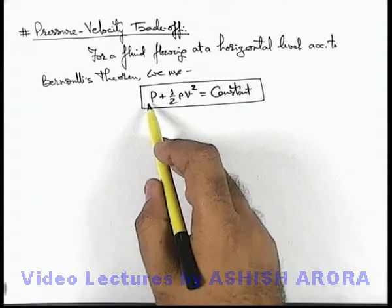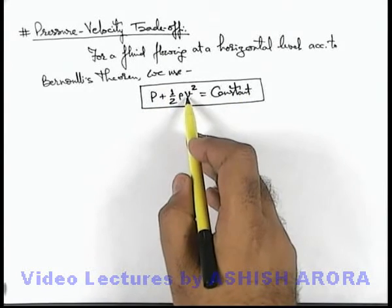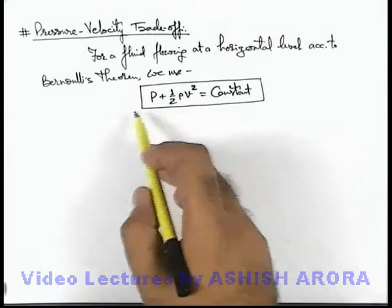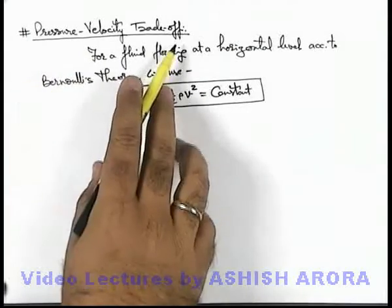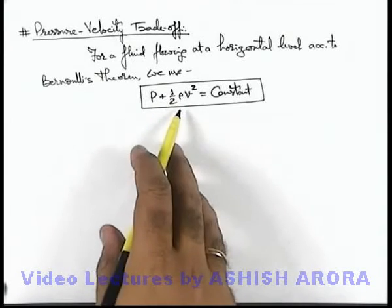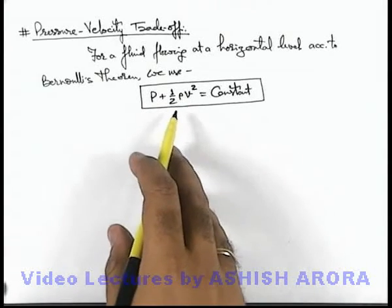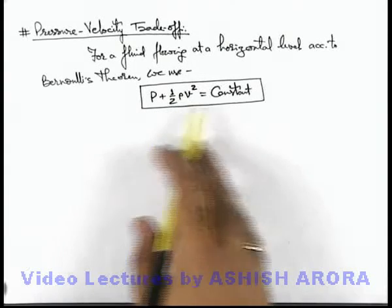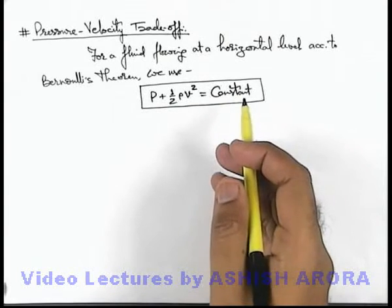and if at a point pressure is increased, automatically the flow velocity will decrease. This phenomenon is called pressure velocity trade-off because pressure as well as velocity both have to trade-off at any point in the flowing fluid. And based on this there are many applications we are going to see.